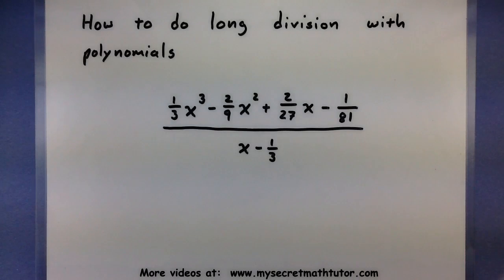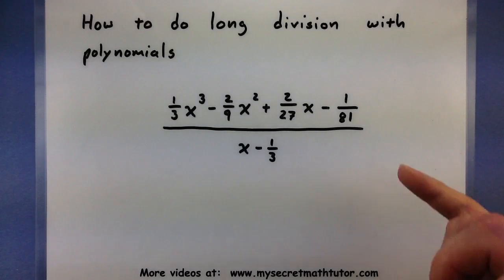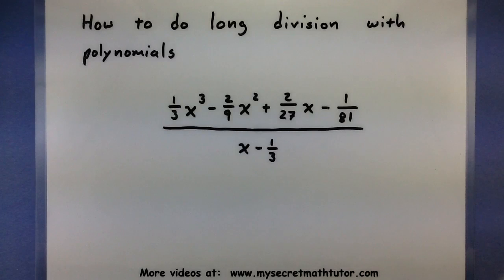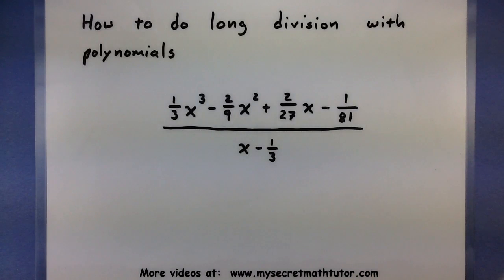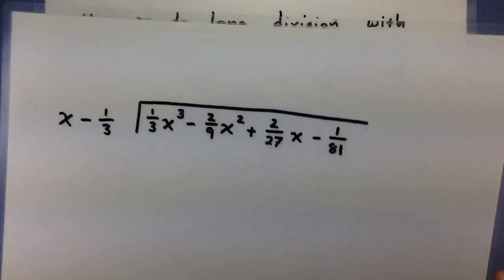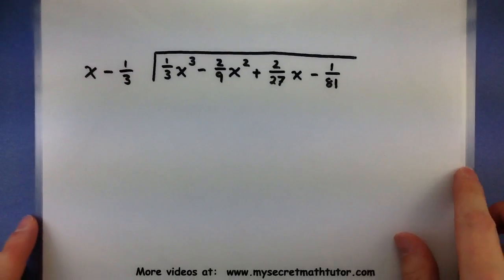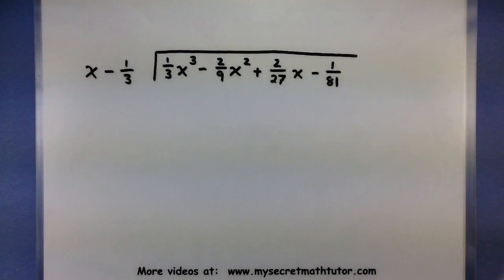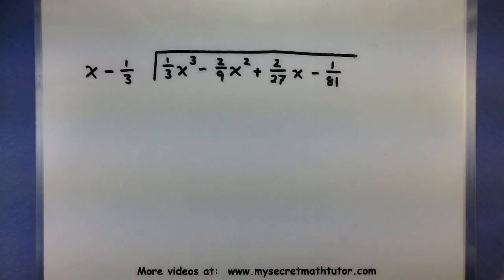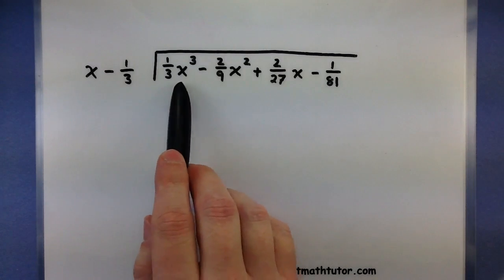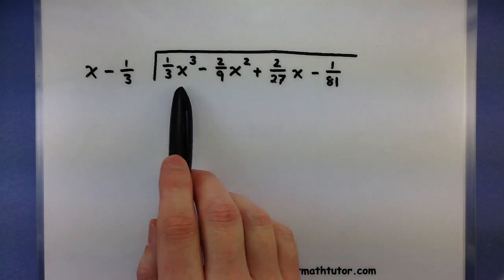Alright, the very first step in polynomial long division is to take your first polynomial, put it underneath your division bar, and whatever it's being divided by, put it outside of your division bar. So that would give you something like this. Now, we want to start the division process by looking at the first two terms in each of the polynomials.